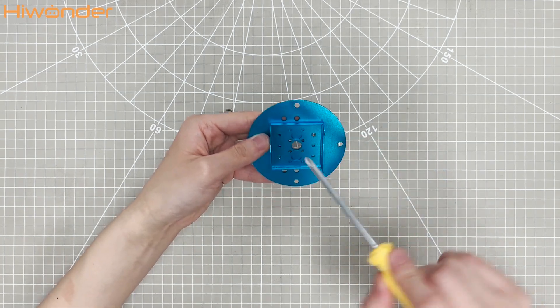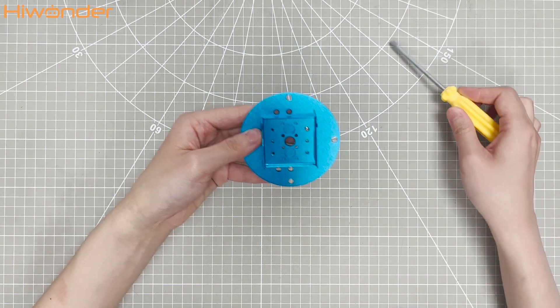Here's a quick tip for you: fix the screws diagonally first to align the holes.